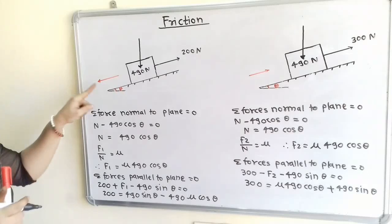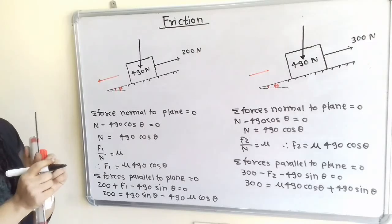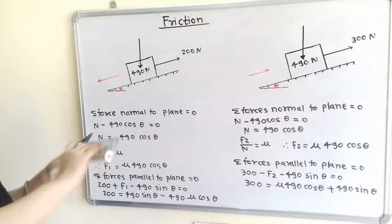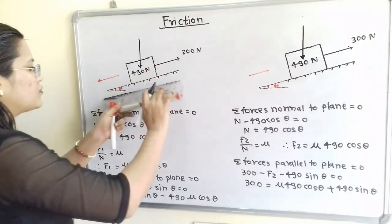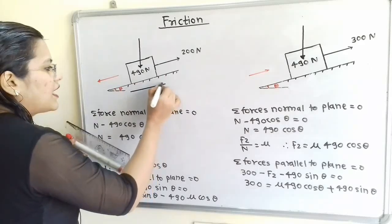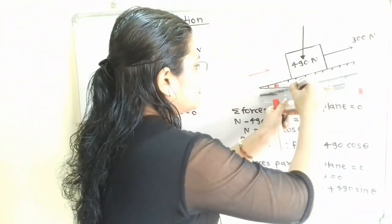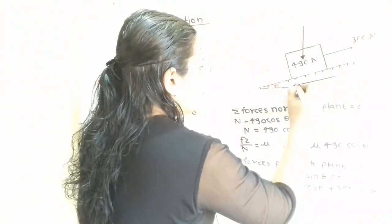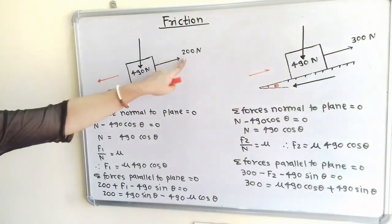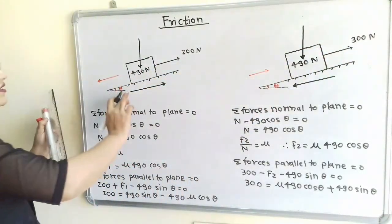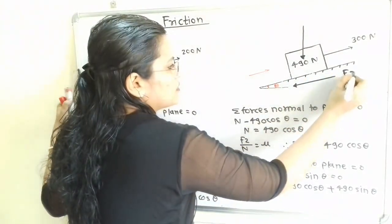In the first case, the block is moving in the downward direction, so we show frictional force in the opposite direction, parallel to the inclined surface. In the second case, the direction of frictional force is also opposite to the direction of motion. Since the applied forces are different, we use suffix 1 for the first frictional force F1, and suffix 2 for the second frictional force F2.